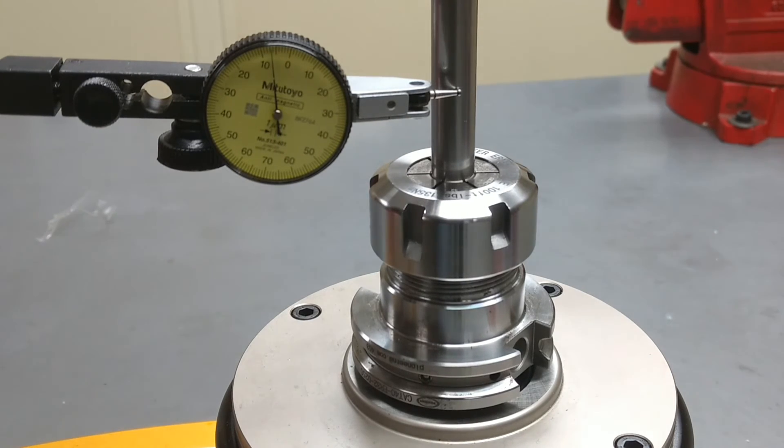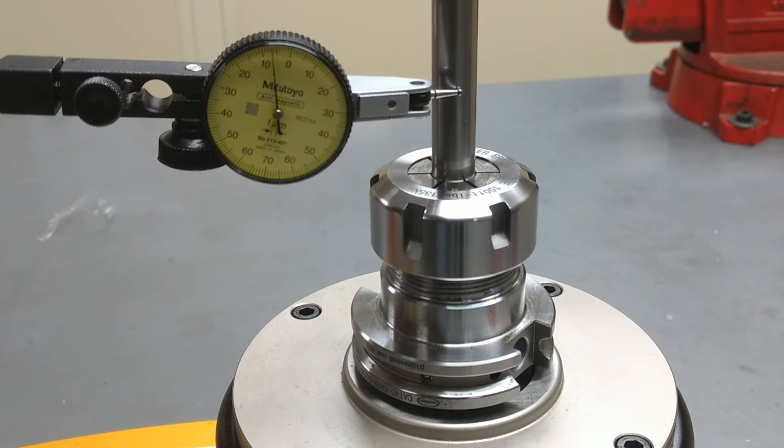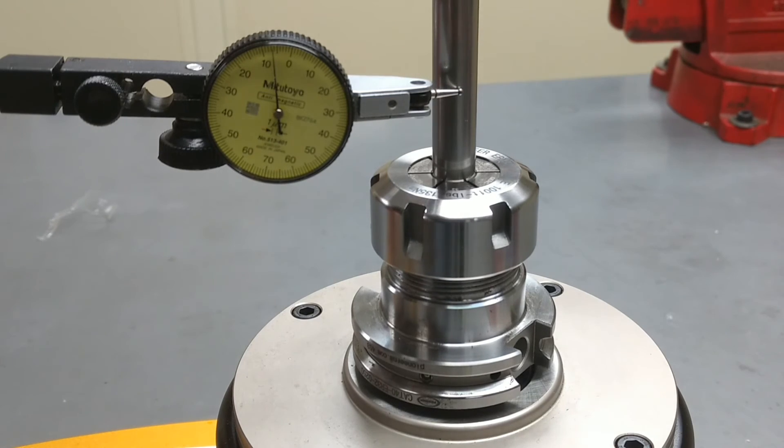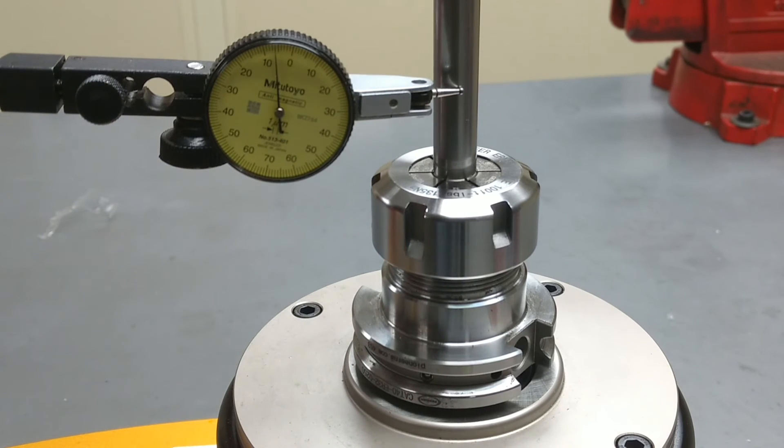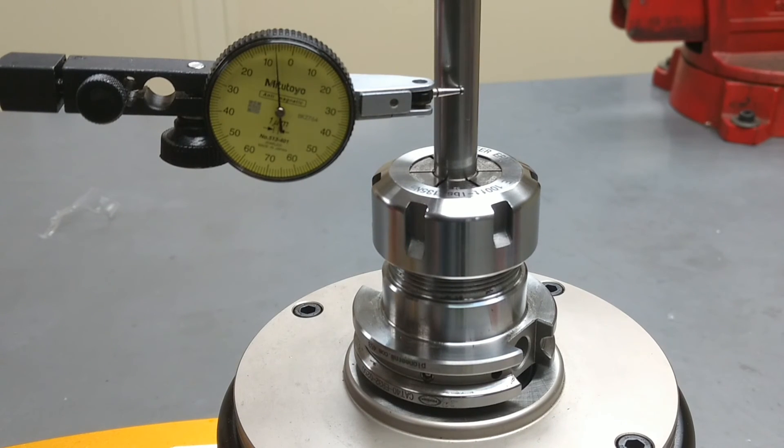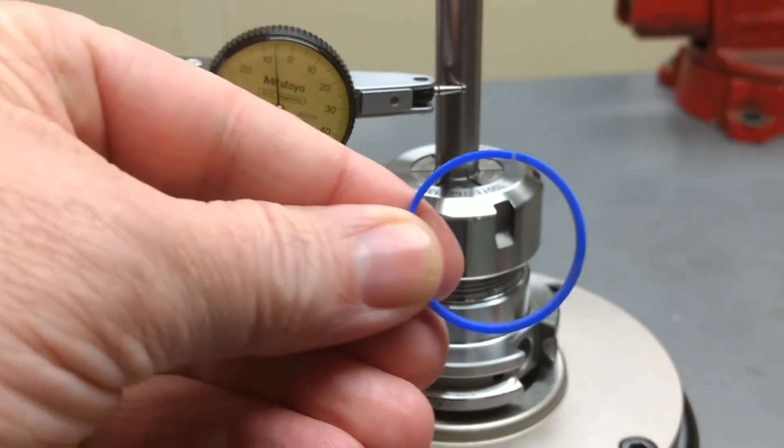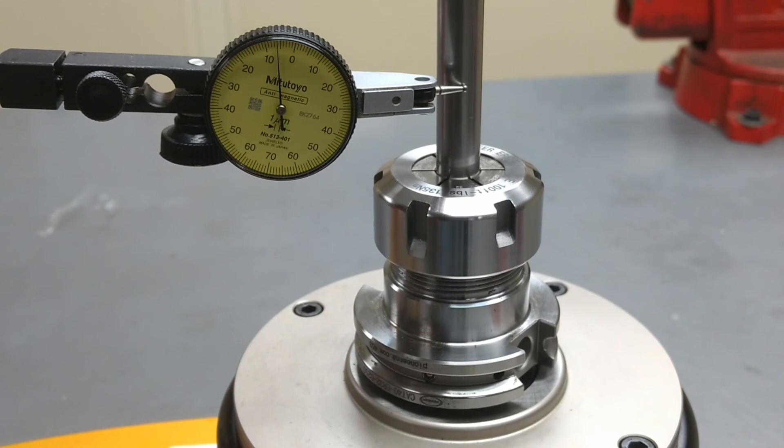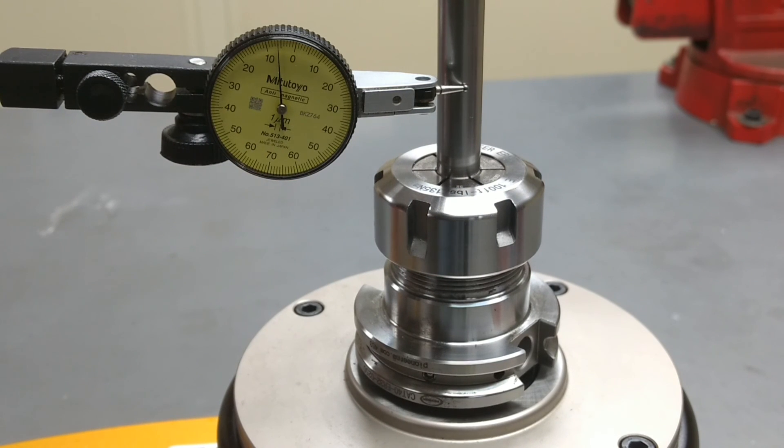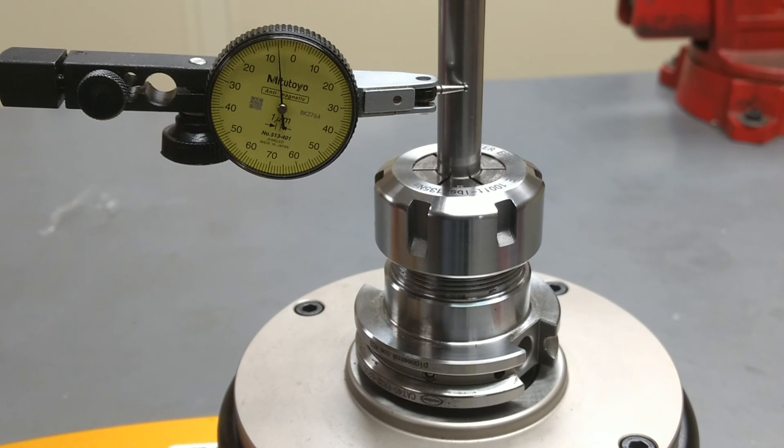So the collet is a very precise collet. It will give you outstanding runout. And this is a standard ER-32 collet chuck off the shelf. As you can see like I said you do have to remove the blue ring. Right here you have to remove this blue ring to use it in that standard nut. But the performance is there and you'll be very happy with the outcome using this collet.